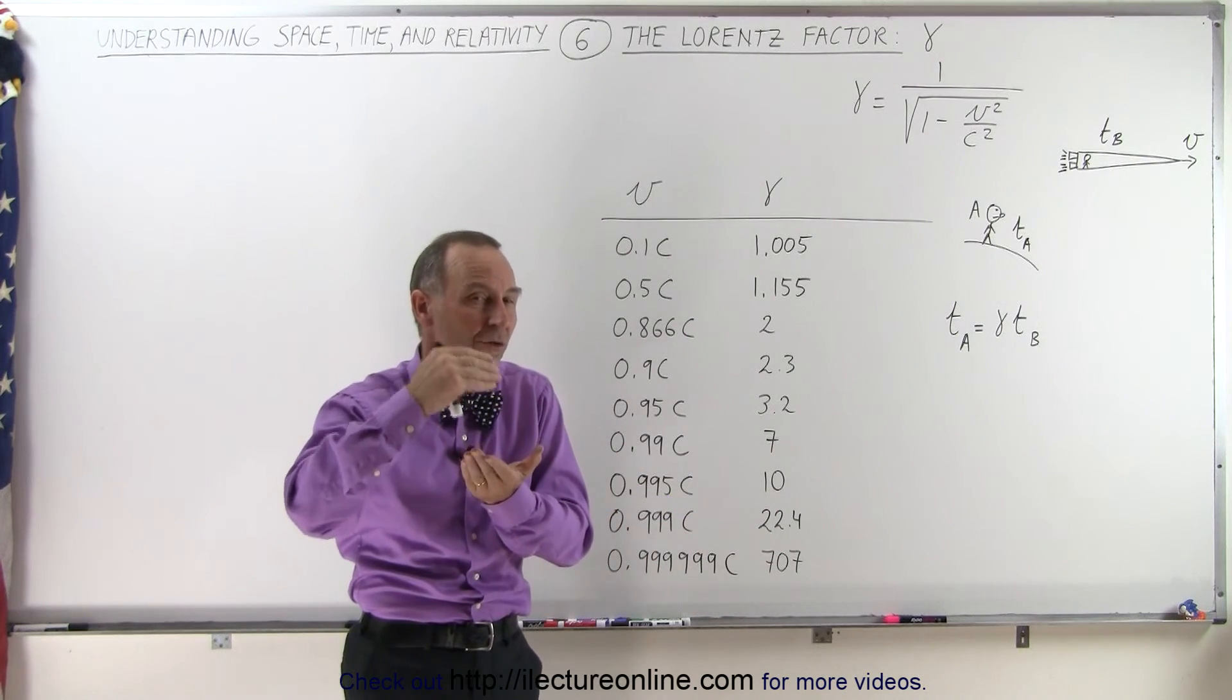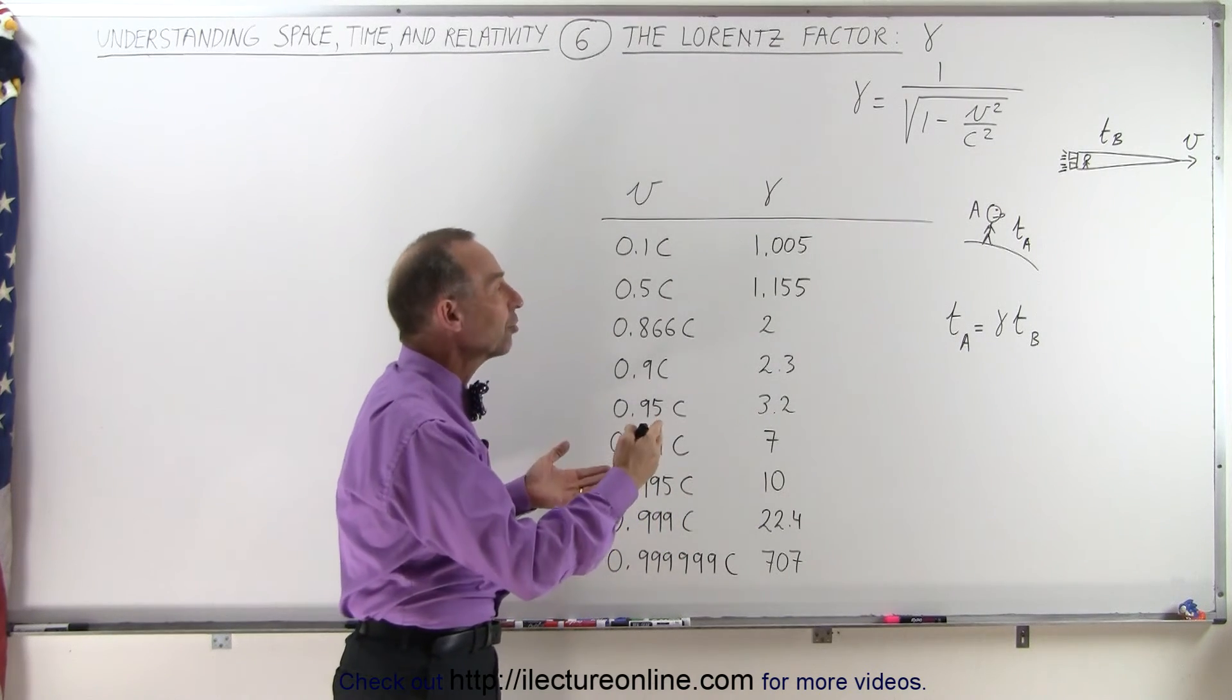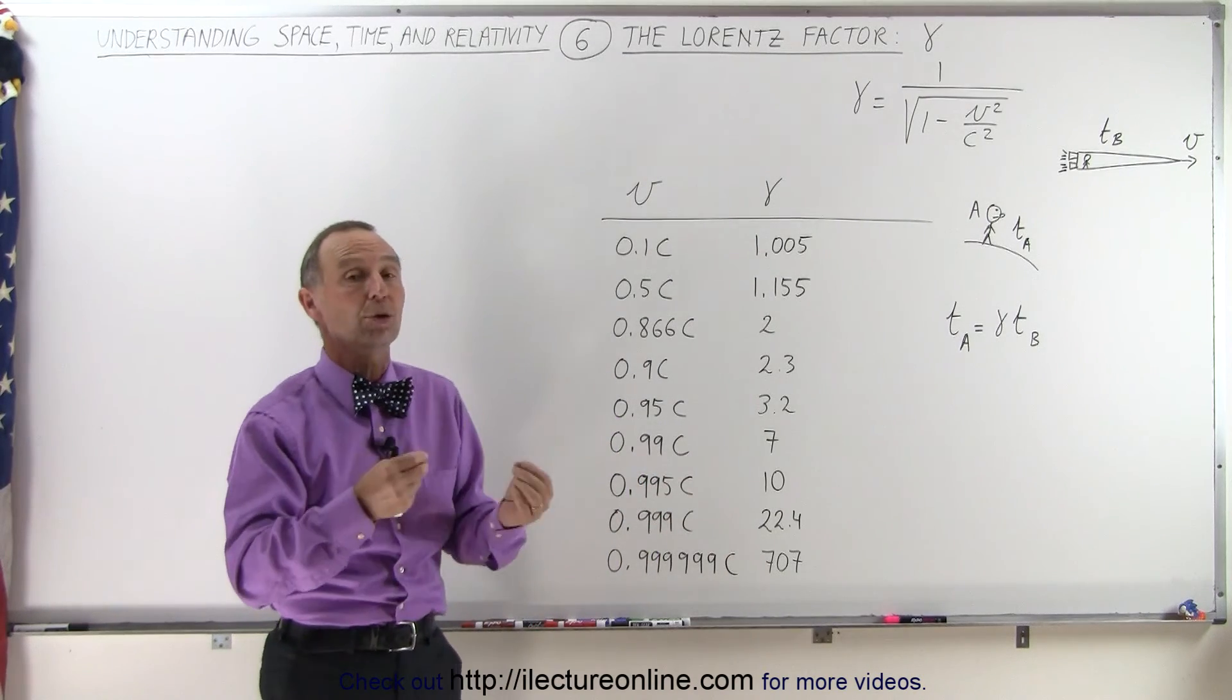As you get closer and closer to the speed of light, the factor becomes extremely large, and the differences in the time, mass, and length observed become enormous.